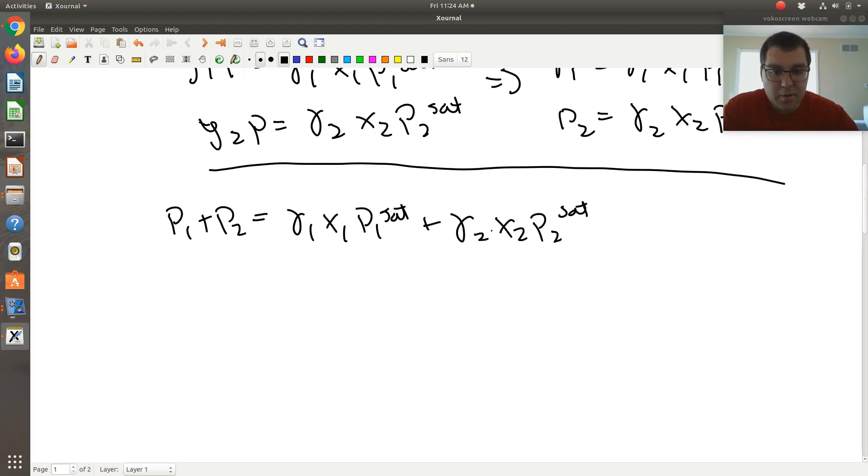I'm going to plug in expressions for my gammas. So P1 plus P2 is equal to gamma 1. Well, this would be exponential of, because remember it's log gamma 1, which is AX2 squared, exponential of AX2 squared times X1 times P1 sat.